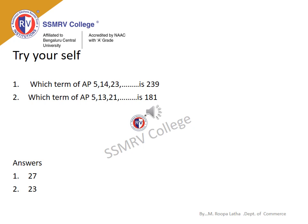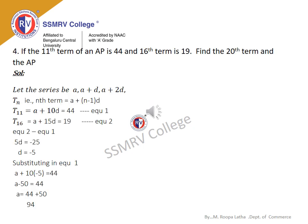Here are a few problems — try them yourself. In a similar way you can do these problems; the answers are given at the bottom. Please solve them. A few more problems have been given which you can try for yourself. Another type of problem you can expect: If the 11th term of an AP is 44 and the 16th term is 19, find the 20th term and the AP.